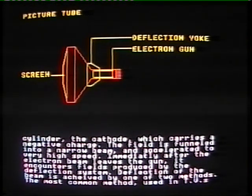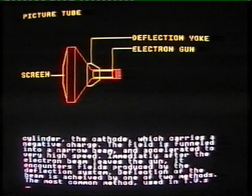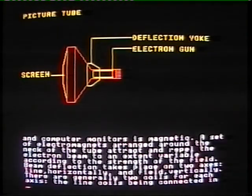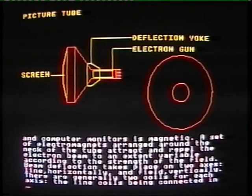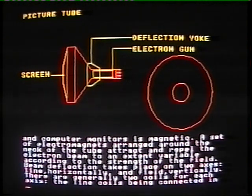Immediately after the electron beam leaves the gun, it encounters the fields produced by the deflection system. Deflection of the beam is achieved by one of two methods. The most common method, used in televisions and computer monitors, is magnetic. A set of electromagnets arranged around the neck of the tube attract and repel the electron beam to an extent variable according to the strength of the field.